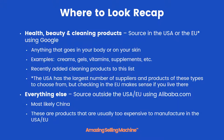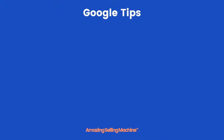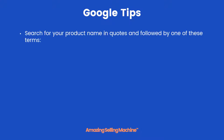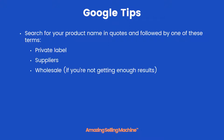For everything else, you pretty much want to source outside the USA and EU using Alibaba.com. Most products will come from China — these are products that are usually just too expensive to manufacture inside the United States or EU. When using Google to search for suppliers, put your product name in quotes (called an exact match) and follow it with one of these three terms: private label, suppliers, or wholesale. Only use wholesale if you aren't getting enough matches using private label or suppliers, since we're not primarily trying to find wholesalers.